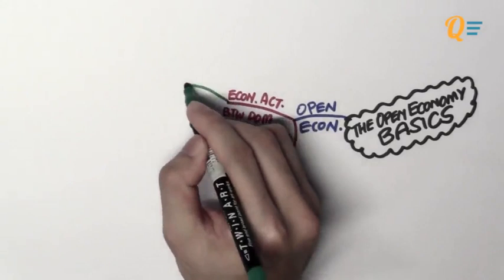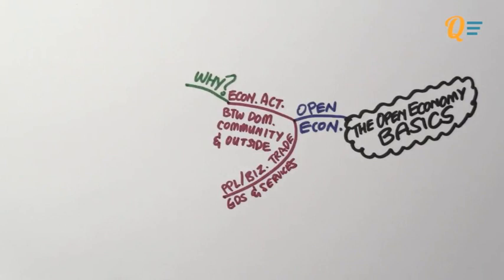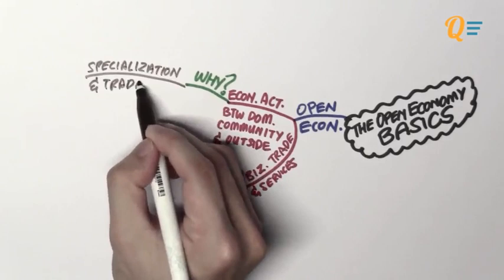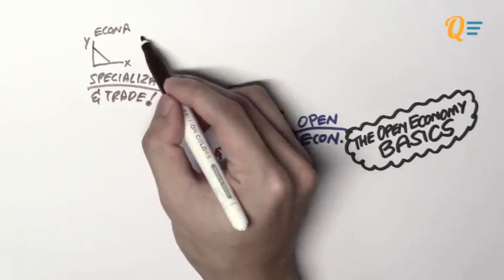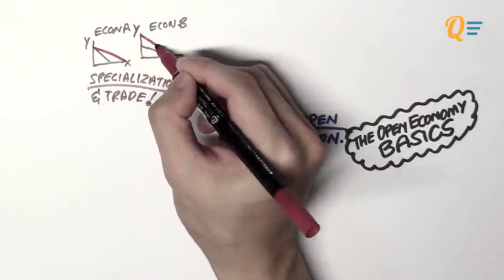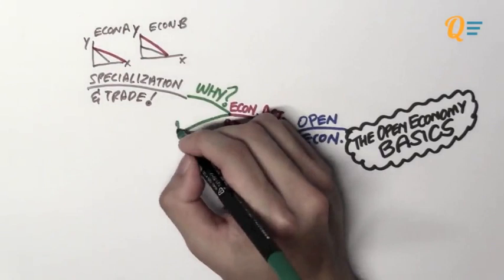So why will there be these kinds of economic activities between two countries? Remember chapter one? We weren't only talking about the PPF, but we were also talking about specializing and trading. One of the reasons why two countries would want to specialize and trade is so that they can help each of them push out the PPF, which is also the consumption possibility frontier. So both economies become better off because they can produce more, hence they can consume more.